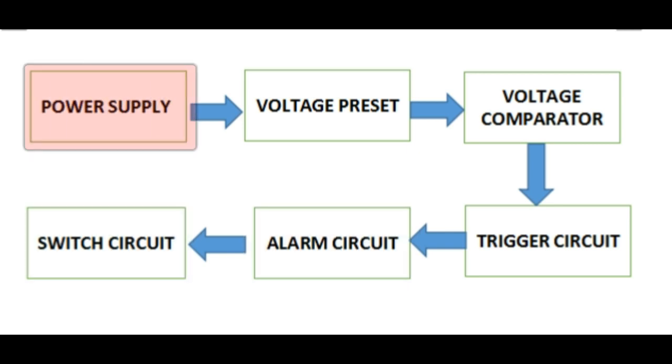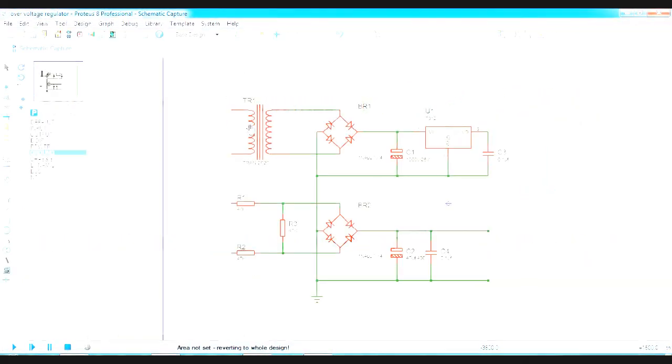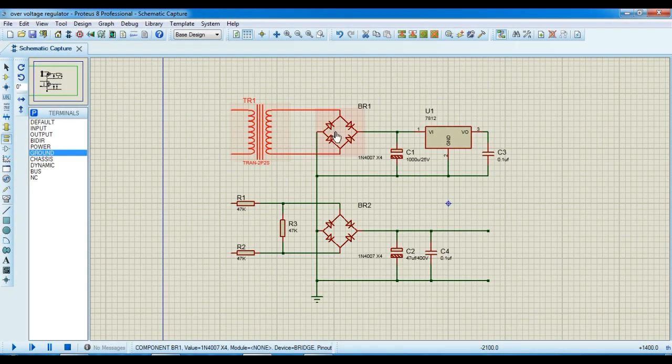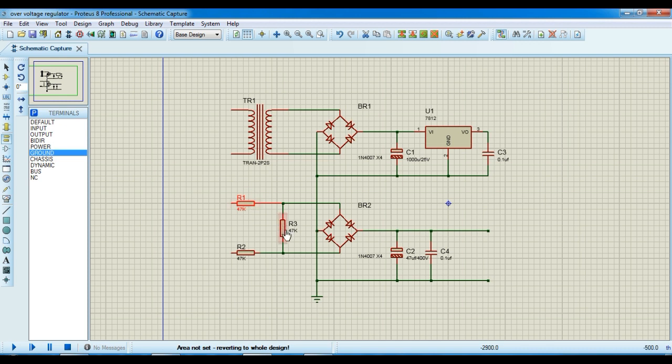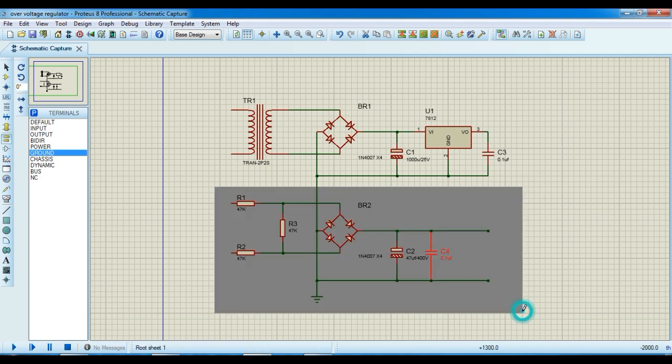Starting off with the first block which is the power supply, the circuitry consists of a voltage step down transformer, the bridge rectifier, the filter and the voltage regulator. This power supply is used specifically to power the electronic circuit while the second power supply which is built around a three resistor voltage divider is used for the preset of various voltage which the system monitors.